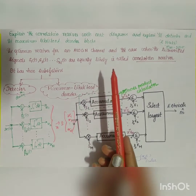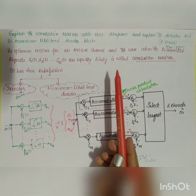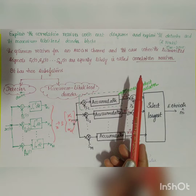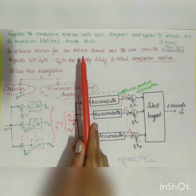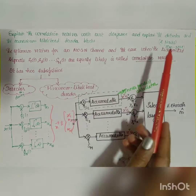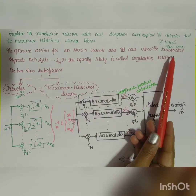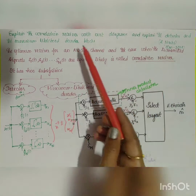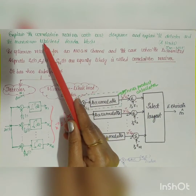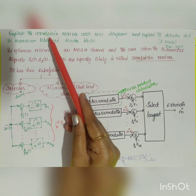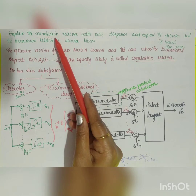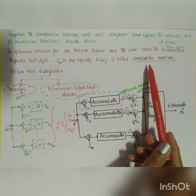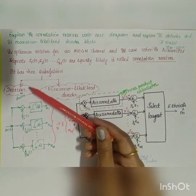The next question is: explain the correlation receiver with neat diagrams and explain the detector and the maximum likelihood decoder blocks. It is asked for eight marks from January 2019. An optimum receiver is called a correlation receiver.